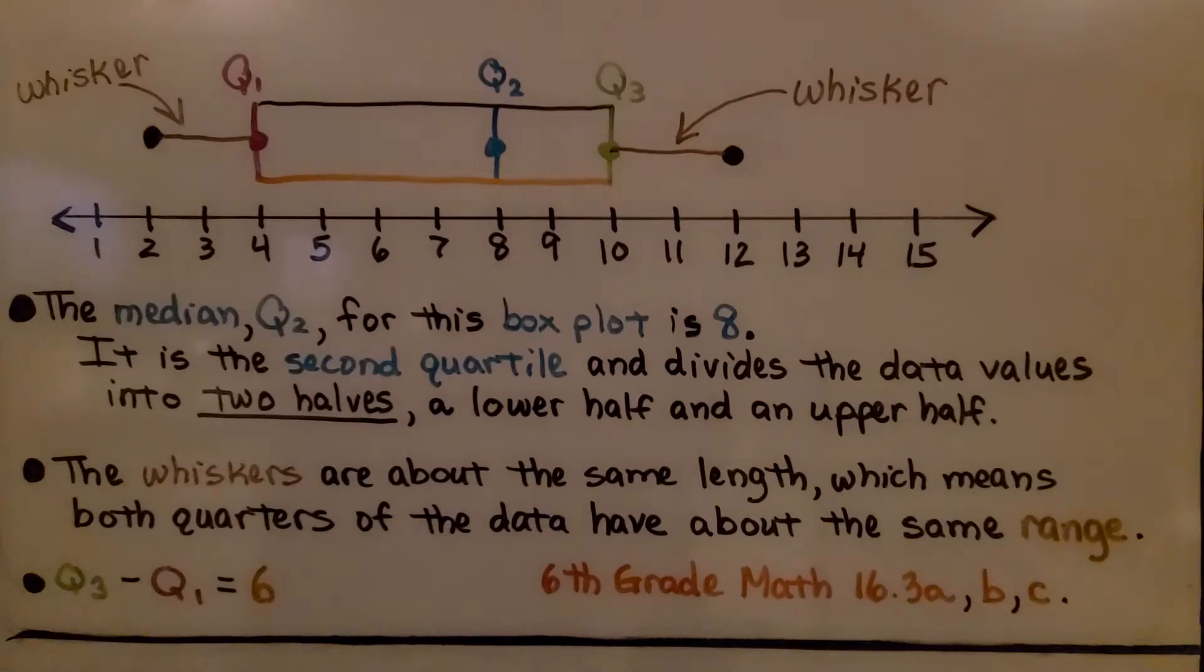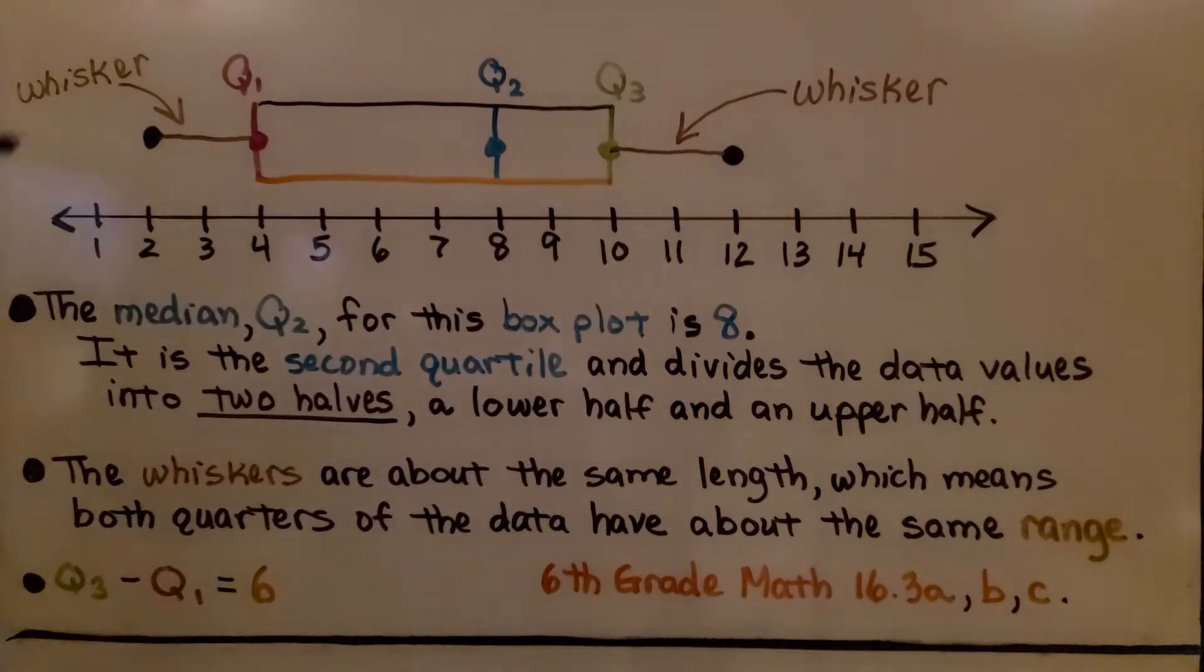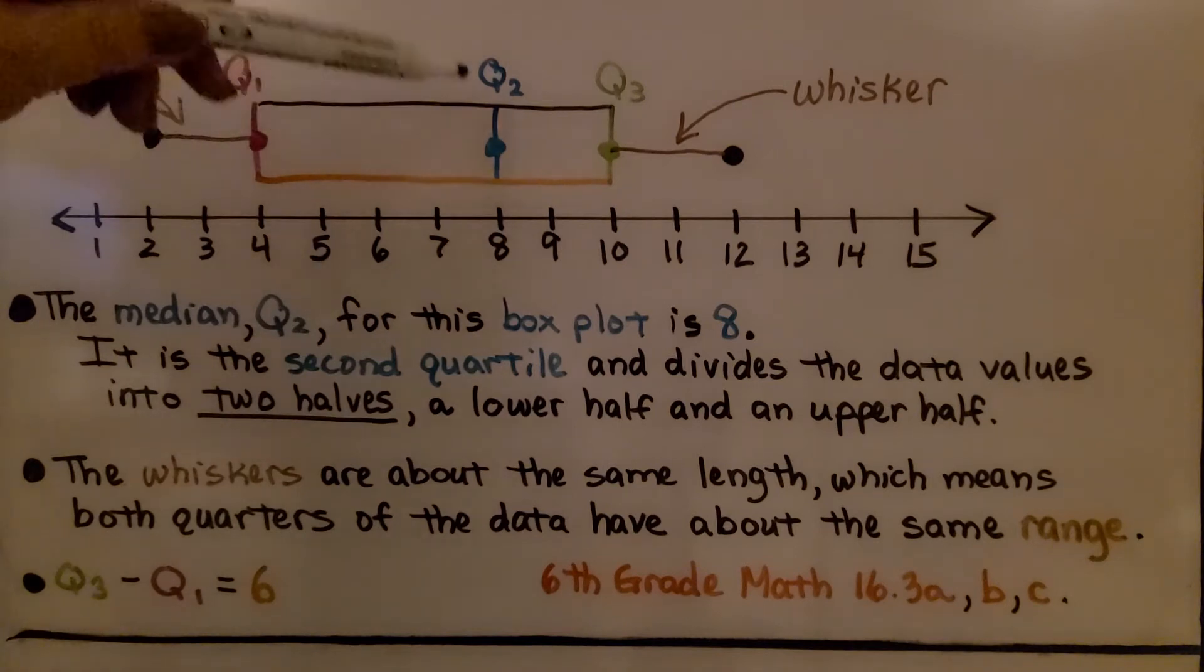So let's take a look at this box plot. We can see we have a whisker on this side, a whisker on this side. The median Q2 for this box plot is 8.